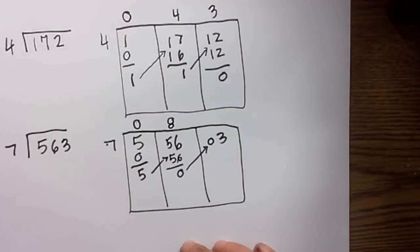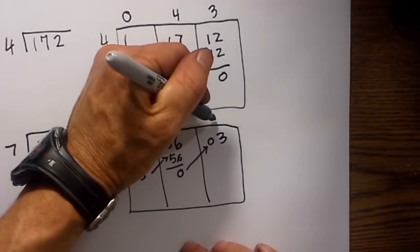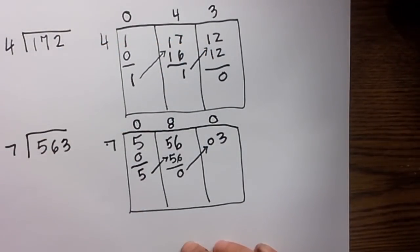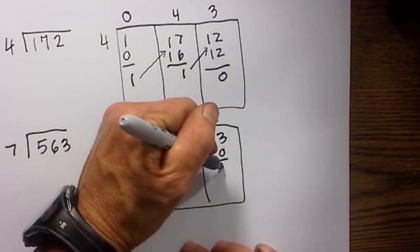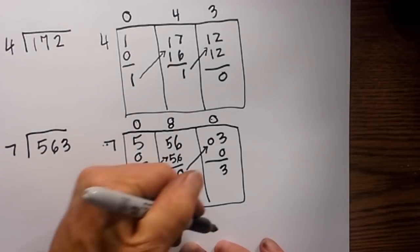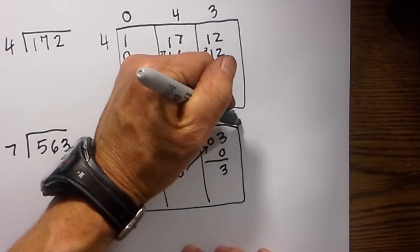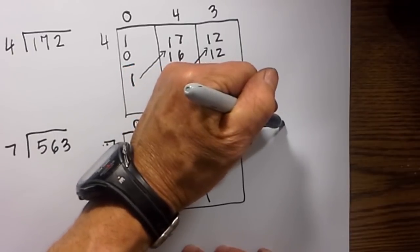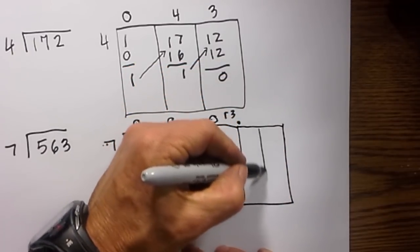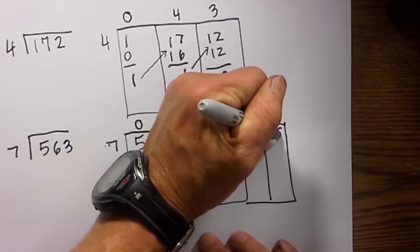Move the zero to the next column. Seven will not go into three, so we have a zero. Zero times seven is zero, so we have a remainder of three. You could leave it with a remainder of three, but you don't have to. We can put a decimal place there. Let's go out two decimal places. You can go as many as you would like, but I'll just do two. So we're going to write a zero and a zero.